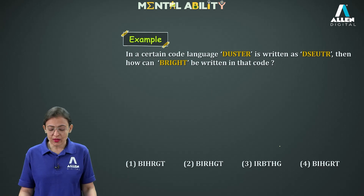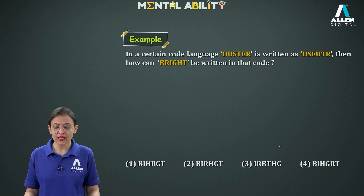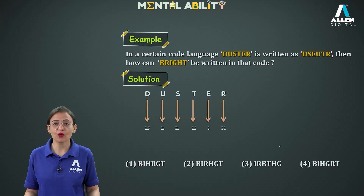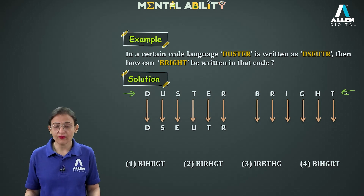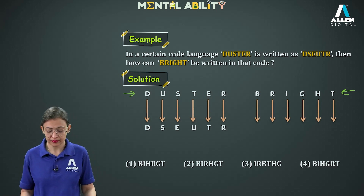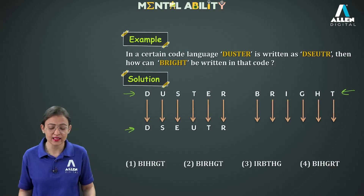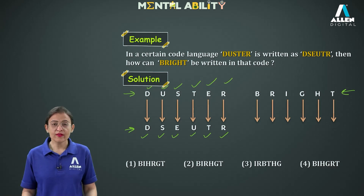Moving to the next one. In a certain code language, DUSTER is written as D, S, E, U, T, R. Then how can BRIGHT be written in that code? The letters of the given word and the word we need to code are not the same, so there is no direct coding. However, the letters of DUSTER and its code D, S, E, U, T, R are exactly the same — D, U, S, T, E, R — so reordering of letters is taking place.